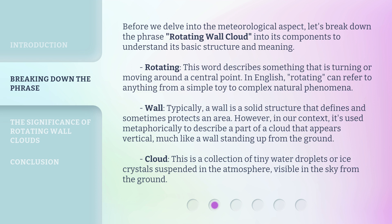Wall — typically, a wall is a solid structure that defines and sometimes protects an area. However, in our context, it's used metaphorically to describe a part of a cloud that appears vertical, much like a wall standing up from the ground. Cloud — this is a collection of tiny water droplets or ice crystals suspended in the atmosphere, visible in the sky from the ground.